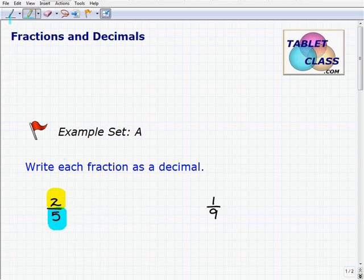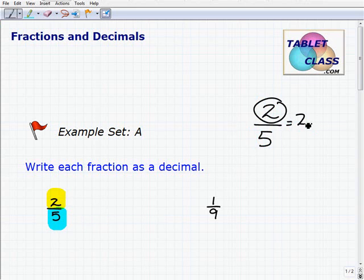That's what this fraction is actually literally stating. 2 fifths, 2 fifths is right here, means 2, the fraction bar is division, divided by 5. So we're going to get a calculator out and do this.